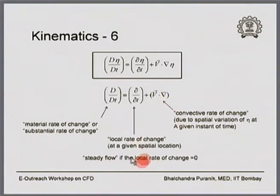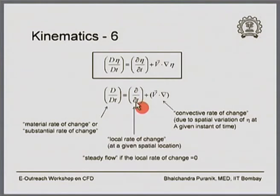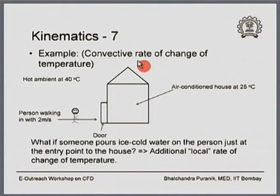An important terminology: if the local rate of change — the time rate of change of any quantity at a given location — is equal to zero, the flow is called a steady flow. If the partial derivative with respect to time is zero, we call the flow steady; otherwise it is unsteady flow.